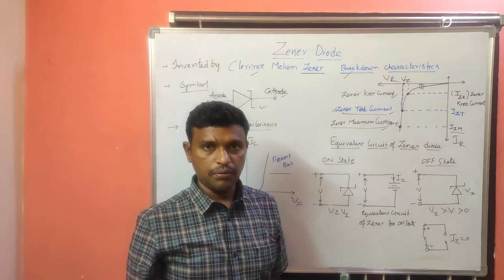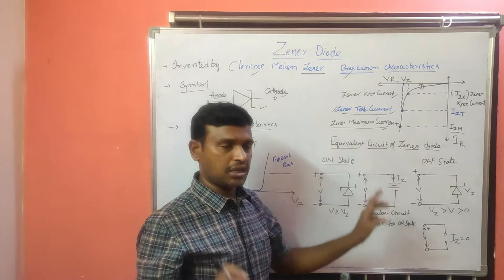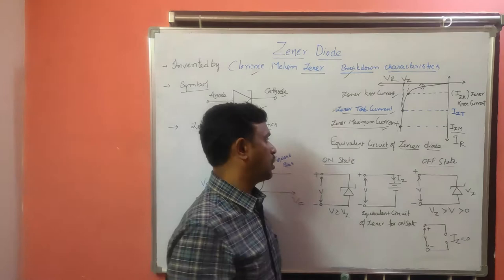Once again, the GINA diode can be operated in the reverse breakdown region only, that is in reverse bias condition. This is about the characteristics of the GINA diode. Next, we will go with the equivalent circuit of the GINA diode.